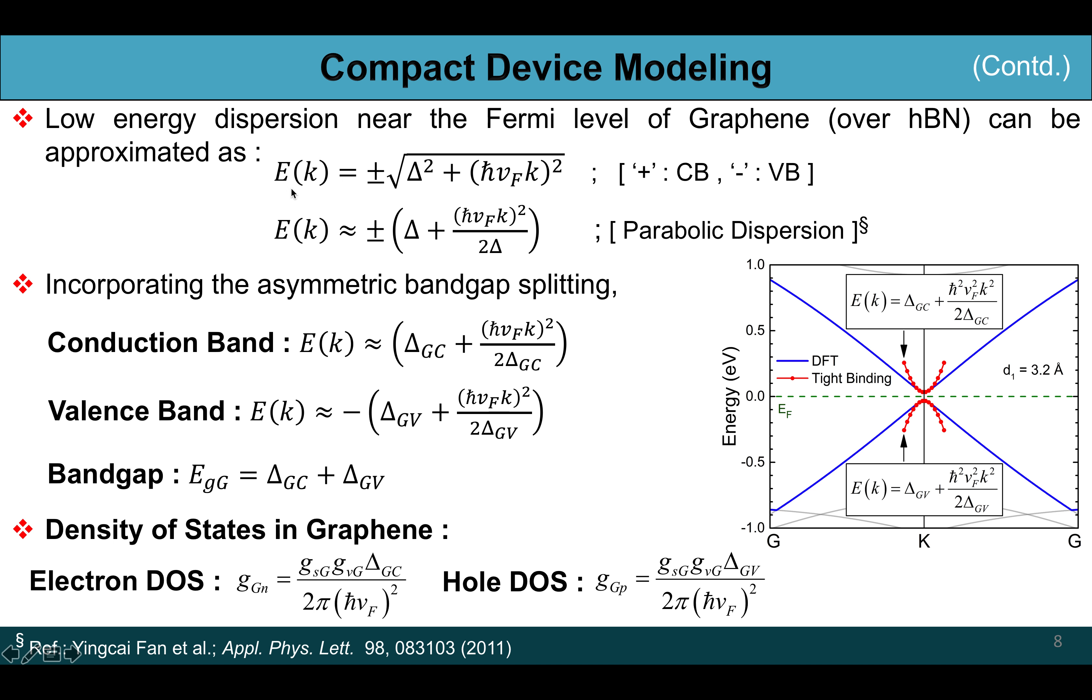We have curve fitted this equation to the DFT data to check the consistency of the model. Now incorporating the asymmetric band gap splitting, in general the conduction band and valence band formulas are given in the slide. Here the band gap Egg becomes delta Gc plus delta Gv. Using simple laws of physics we can calculate the density of states of graphene, that is the electron DOS ggn and hole DOS ggp.